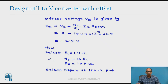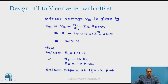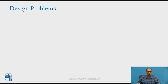Select R1 equal to 1 kilo ohm; therefore Rf equals 10 times R1, so Rf equals 10 kilo ohm. Since R-span is calculated as 62.5 ohm, this is adjusted by using a potentiometer of 100 ohm, which is adjusted to 62.5 ohm.